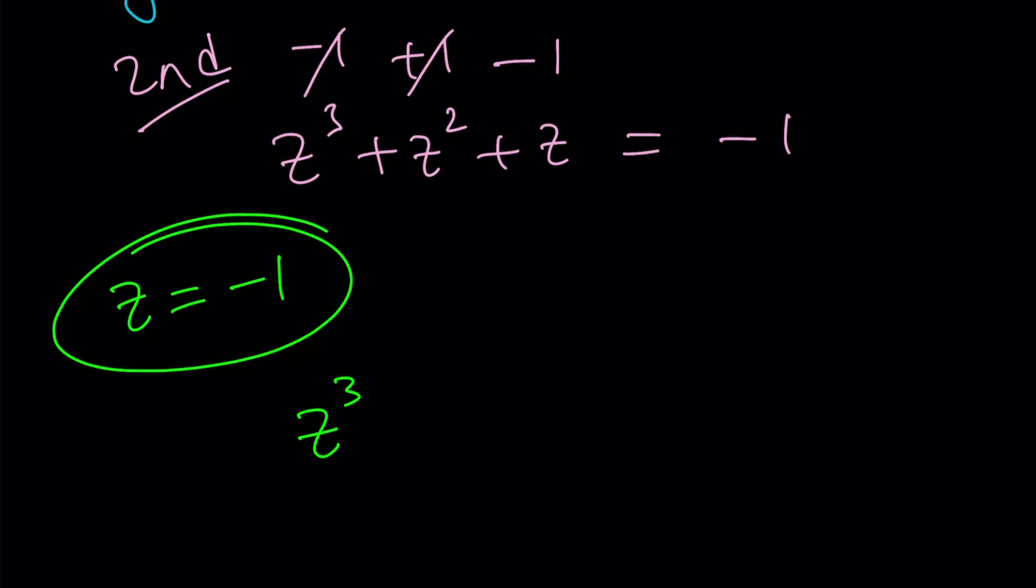How can I get z plus 1? Easy. You just factor out z squared. Right. And that's going to give you z plus 1. And then of course there's another one.